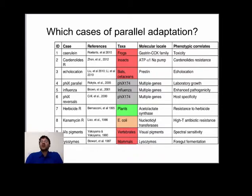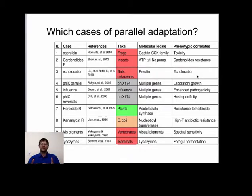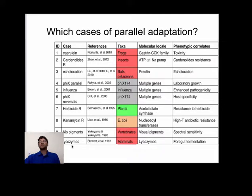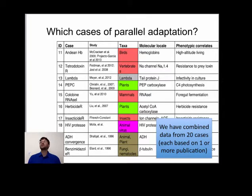So far we've analyzed 20 published cases of parallel evolution, shown here with the implicated taxa, the implicated genes or proteins, and phenotypic correlates of adaptation. Five of these 20 cases are laboratory studies where parallel evolution took place in a laboratory setting, but most are based on naturally evolved changes — such as the famous cases of changes in spectral sensitivity due to amino acid changes in visual pigments that have happened repeatedly in different groups of animals, or the famous case of convergence in stomach lysozymes between cows and langurs.